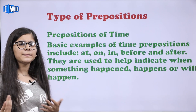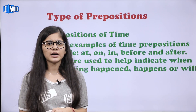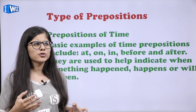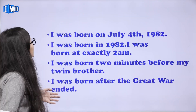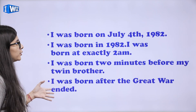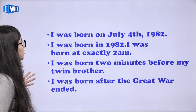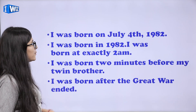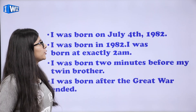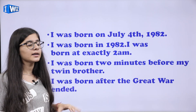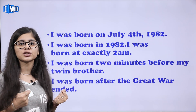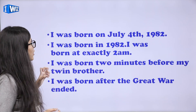Yeh wali prepositions hum kis liye use karte hain — jo indicate karti hain ki kuch hone wala hai. For example: I was born on July 4th, 1982. Toh woh bolta hai ki main kab born hua — July 4th, 1982. Hum time bata rahe hain, date bata rahe hain specifically. Toh hum kya use karein ge? Prepositions of time — that is 'on'.